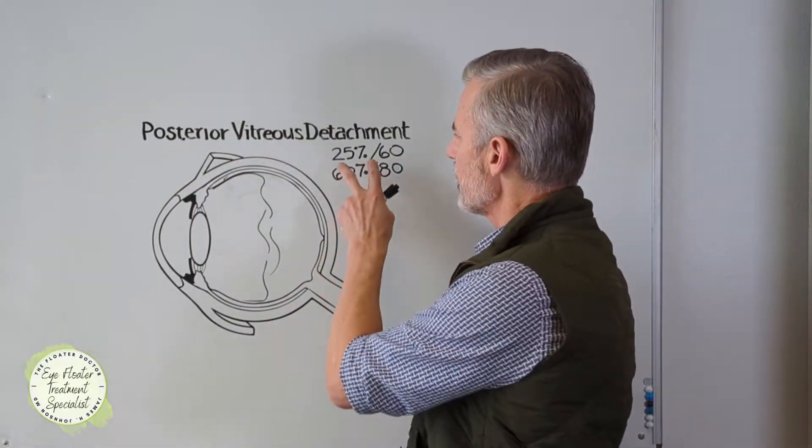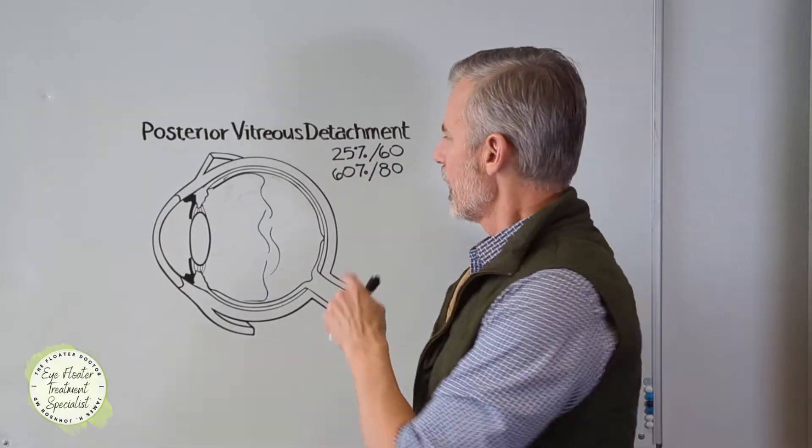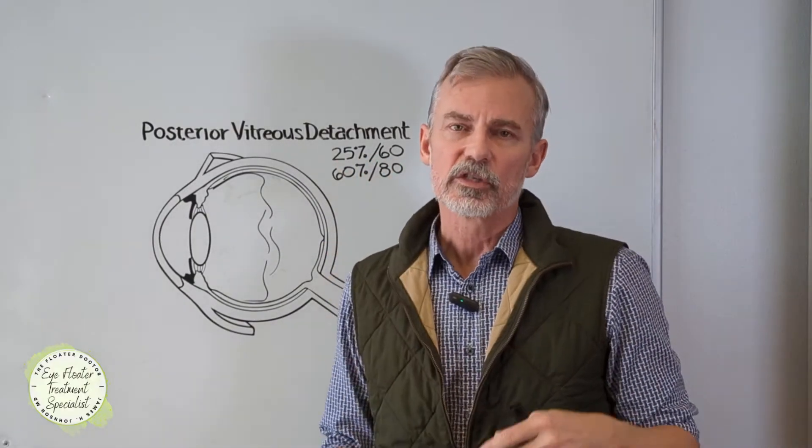Posterior vitreous detachments are common. We'll see them at about 25% of 60-year-olds, about 60% of 80-year-olds. So that's common.